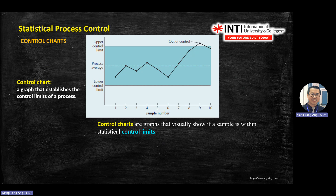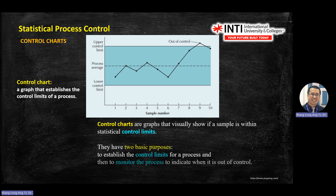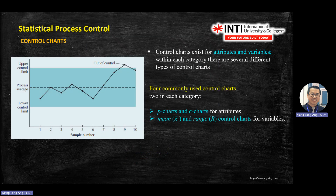A control chart has upper and lower limits, enabling early detection of out-of-control points. There are two purposes when answering a question about control charts: first, you should be able to calculate the control limits; second, you need to answer whether the process is in control or out of control. Under this topic, there are two types of chart: p-chart and c-chart, plus the mean and range control chart.